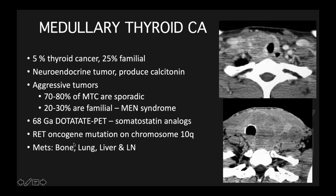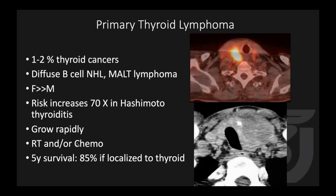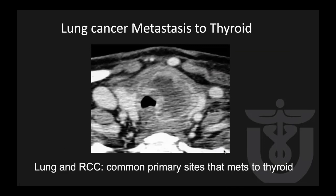Also, RET oncogene mutation is notable, so there should be molecular profiling for medullary thyroid cancer treatment. Thyroid lymphoma is rare — only 1 percent of thyroid cancers and B-cell type. A patient with Hashimoto thyroiditis has a high risk of thyroid lymphoma, so a Hashimoto patient presenting with a rapidly growing mass should be considered lymphoma until proven otherwise. Imaging-wise, it is not specific — just a diffuse infiltrative tumor. Lastly, metastasis to the thyroid gland, from lung cancer for example, is rare but can happen, with lung and renal cell being the two most common primary sites.